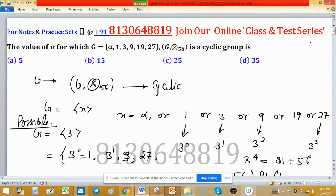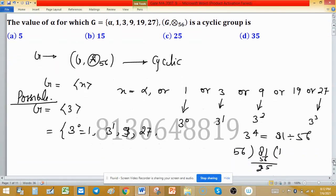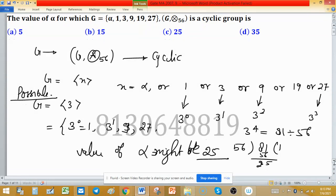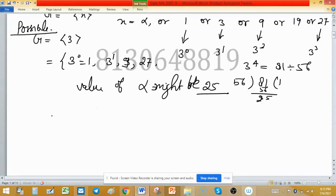25 is not given in the set. I think I missed some element, or it may be that 3 is generating this element. So the value of α might be 25. If the value of α is 25, then G can be written as generated by 3.